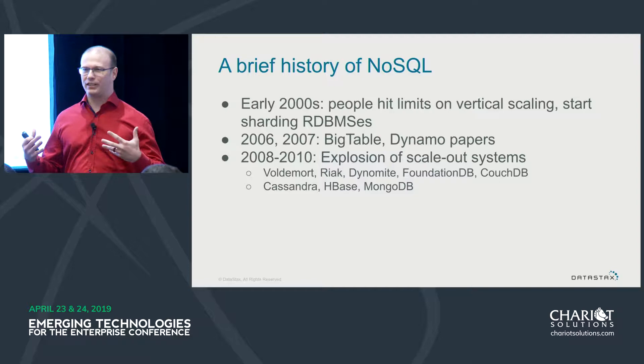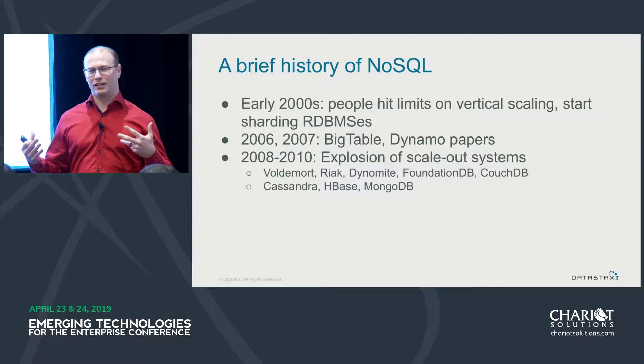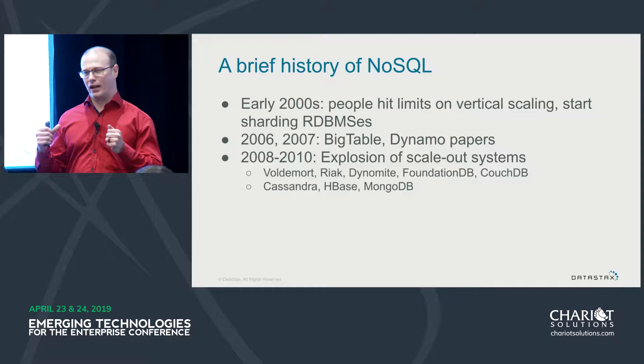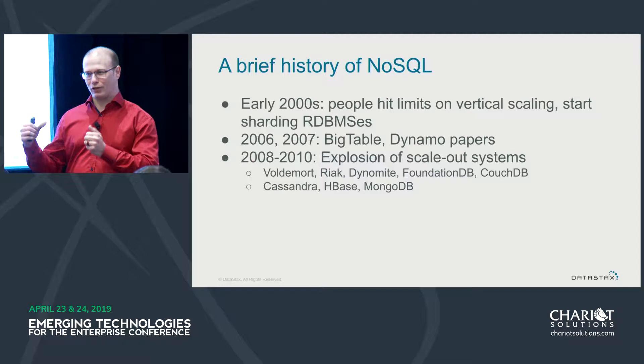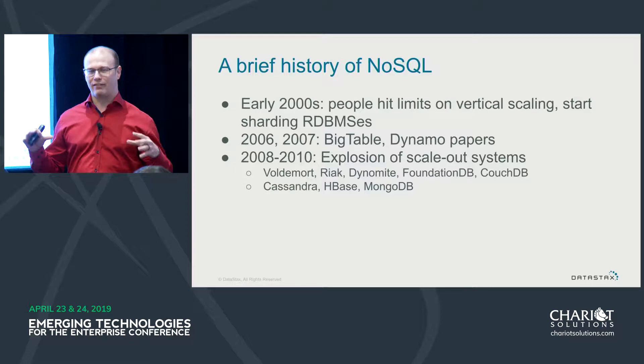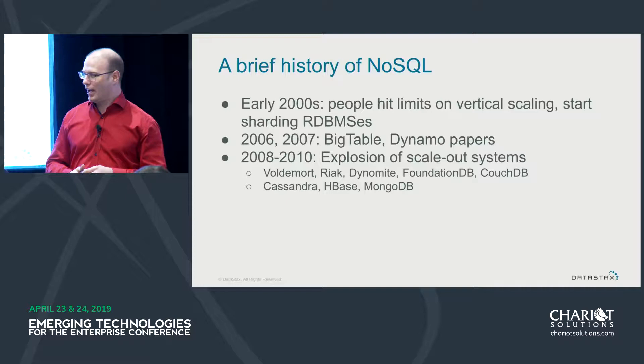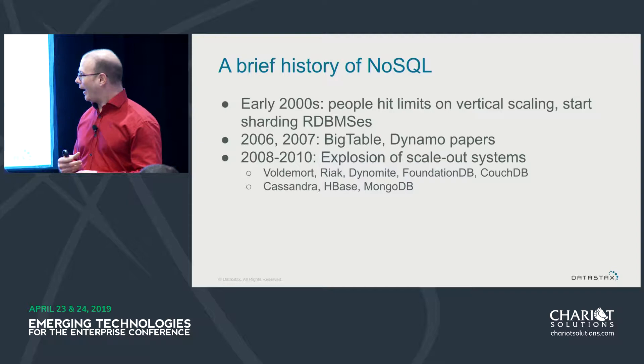They had the biggest Sun Microsystems boxes money could buy at the time. First they started sharding their data vertically, meaning they put different tables and different categories of data on different big Sun boxes. Even that hit a ceiling, so then they started having to shard horizontally and splitting a single table across multiple machines. They were pioneering this between around 1999 and 2002.